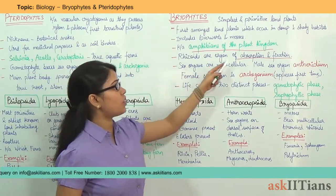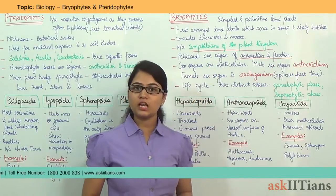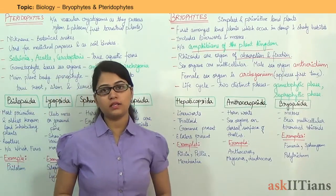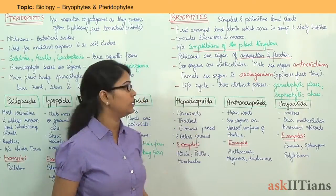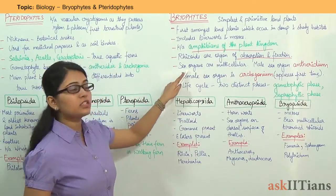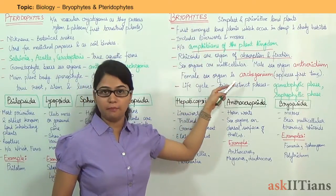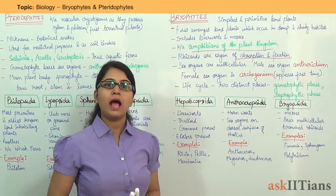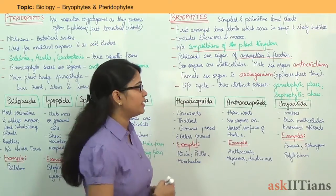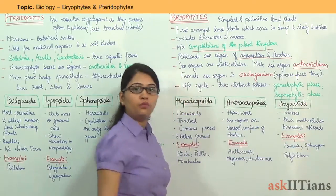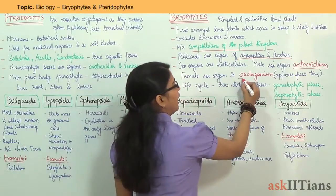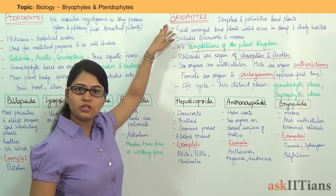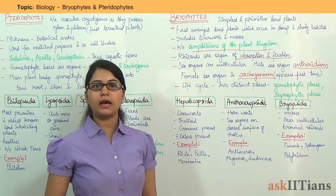Rhizoids are organs of absorption and fixation, and they are present in Bryophytes. Sex organs under Bryophytes are multicellular — two sex organs are present. The male one is called Antheridium and the female one is called Archegonium. This is the first time under this classification in the plant kingdom that two sex organs are appearing.